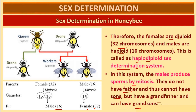In the examination, you would write a table to explain that males are haploid and females are diploid in honeybees. This type is called the haploid-diploid sex determination system. All the slides are based on the NCERT textbook. Thank you — if you have any questions, you can contact me.